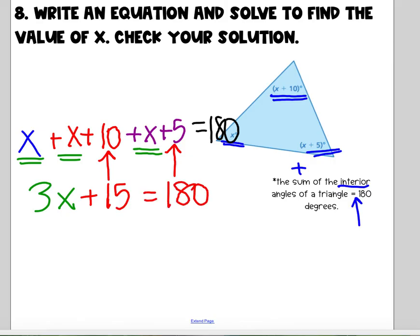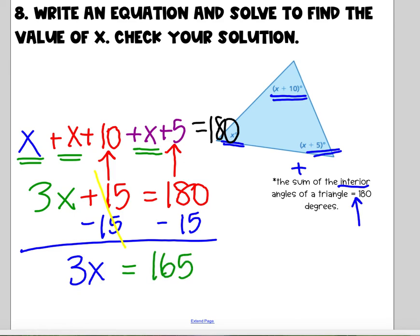Look at this. I'm at a two-step equation. Eliminate that plus 15 by doing the inverse. Three x. What's 15 minus 15? Zero. Equals what's 180 minus 15? 165. Now I'm at a one-stepper. What's the opposite of times three? Divide by three. Divide by that coefficient. So three divided by three is a one. So I'm left with x is equal to what's 165 divided by three? 55 degrees.